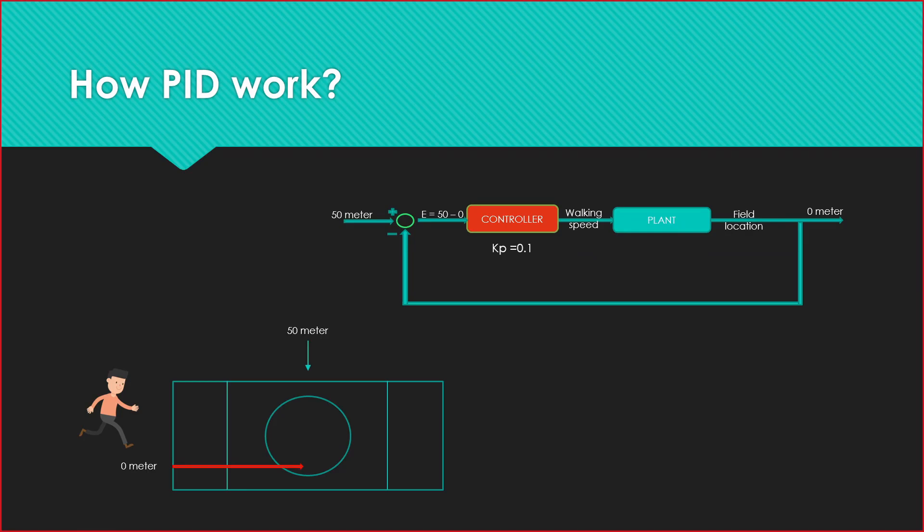And when he started running, what will his mind work? He will do a controller, and he will tell how to run at this speed. When he is on the starting point, he is on the 0 meter and his destination is 50 meter. How will the error be? It will be 50 minus 0.